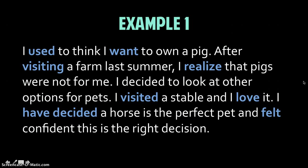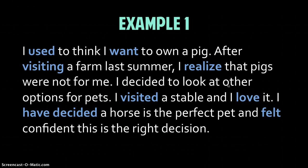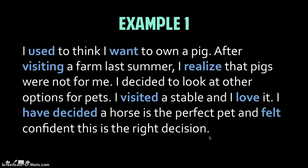We need to figure out what sentences are talking about previous moments in time. The first sentence, the second sentence — 'I realized that pigs were not for me' — that seems like a realization made in the past, so that's past. The first four sentences all talk about moments in the past. And then the last one — the decision is made in the present tense. The speaker currently feels confident that this is the right decision, so we would keep that in the present, and the previous sentences need to be revised for past tense.